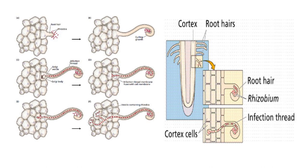Rhizobium produces IAA, and the curling of the root hair is attributed to IAA, so rhizobia become enclosed by the root hair wall. Root hair curling forms a structure called the shepherd's crook. The infection thread originates from the tip of the curled portion of the root hair. It is a tubular structure that carries rhizobia from the root surface to the root cortex. The nucleus of the root hair cell guides the pathway of the infection thread.